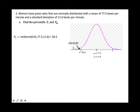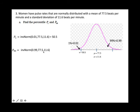Now find P99: the area to the left is 0.99. They give the area and want you to find x, which is P99. Use inverse norm: area to the left, the mean, and standard deviation. You should get 104.5. This part (Part A) uses the material from Section 6.2.